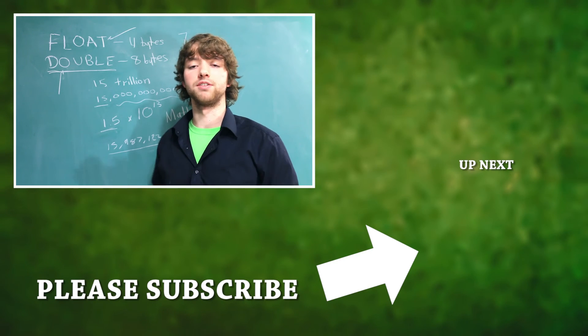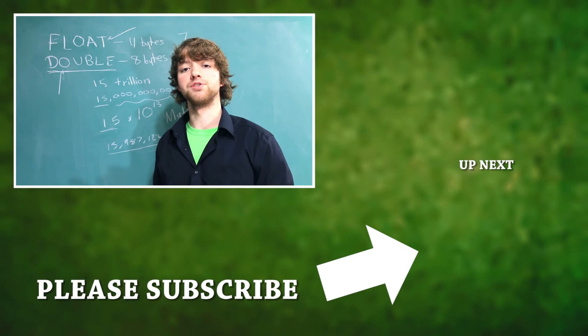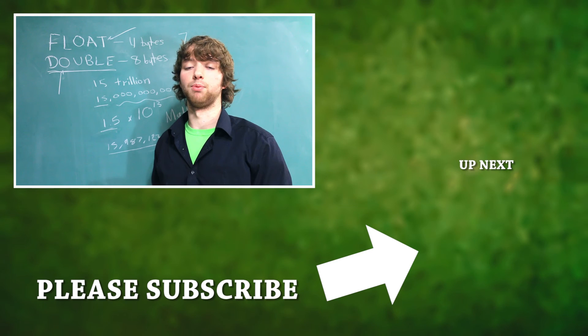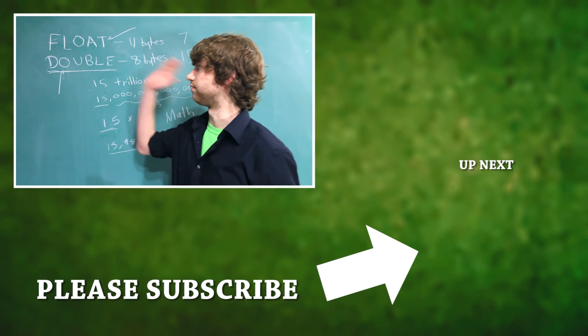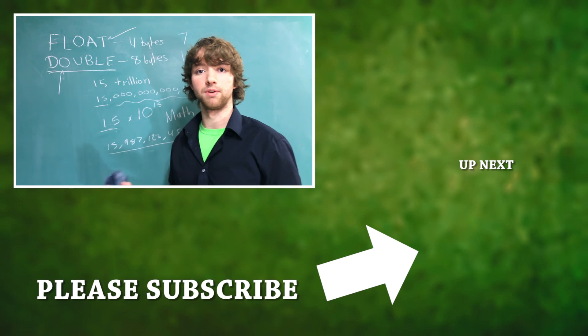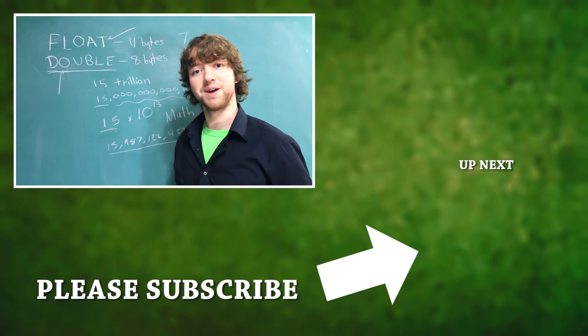In conclusion, float and double are data types that can store tons of numbers, including numbers after a decimal point, but they don't maintain precision. If you're unsure whether you should use float or double, just remember this. Prepare for trouble, make it double.